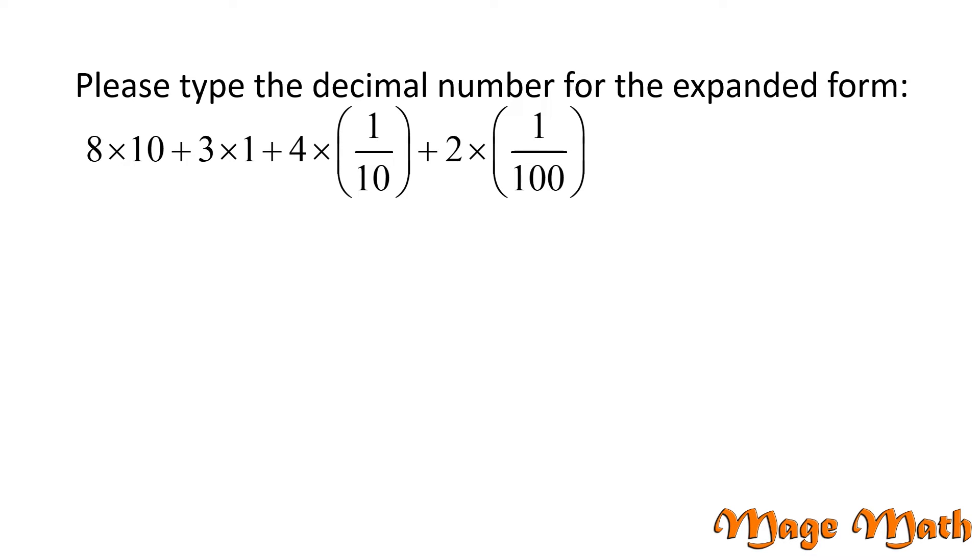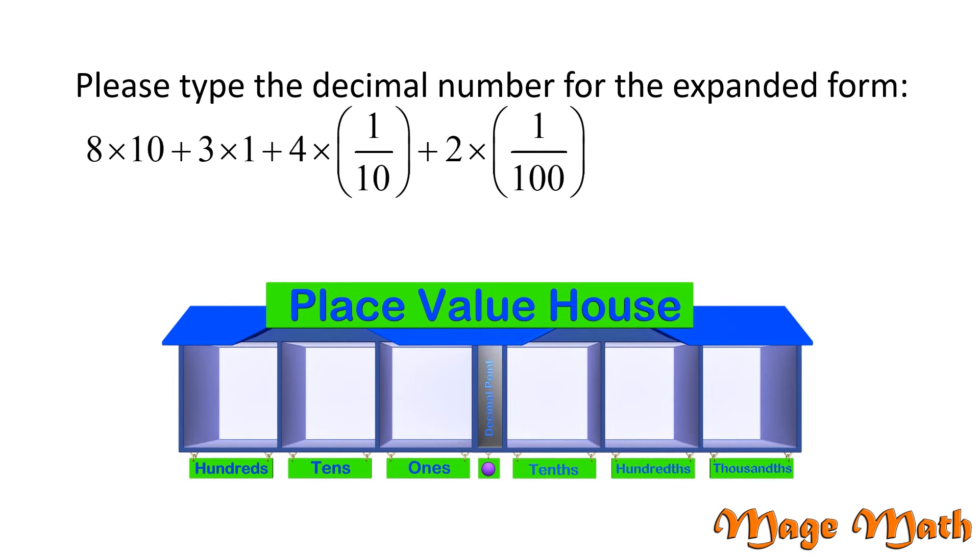Let's try this problem. Please type the decimal number for the expanded form of 8×10 + 3×1 + 4×(1/10) + 2×(1/100). Expanded form is pretty nice as it shows us how many of each place value we have, so let's use our place value house.